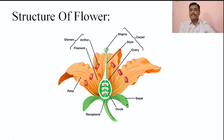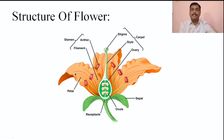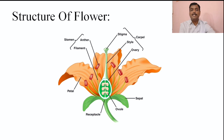The outermost whorl is known as the calyx, made up of sepals. They are generally green in color. They take part in photosynthesis, and when the flower is in bud condition they protect the essential whorls of the flower. The second whorl, which is the colored portion, is known as the corolla. It is made up of petals. The number of petals varies according to the plant, and the petals are generally colored. Calyx is made up of sepals and corolla is made up of petals. These are known as the non-essential whorls of the flower.